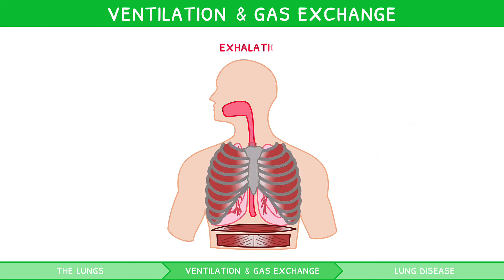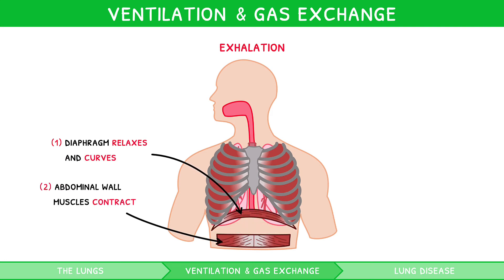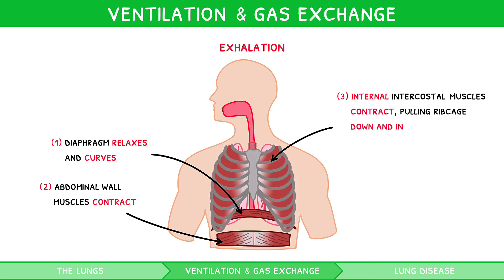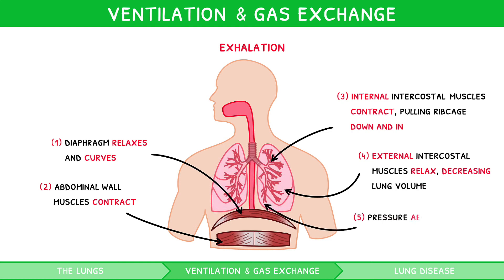During exhalation, the diaphragm relaxes and curves, moving upwards. The abdominal wall muscles contract, pushing organs inwards. The internal intercostal muscles contract, pulling the ribcage inwards and down, and the external intercostal muscles relax, decreasing the volume of the lungs. This raises pressure above atmospheric pressure, and so air is forced out of the lungs.